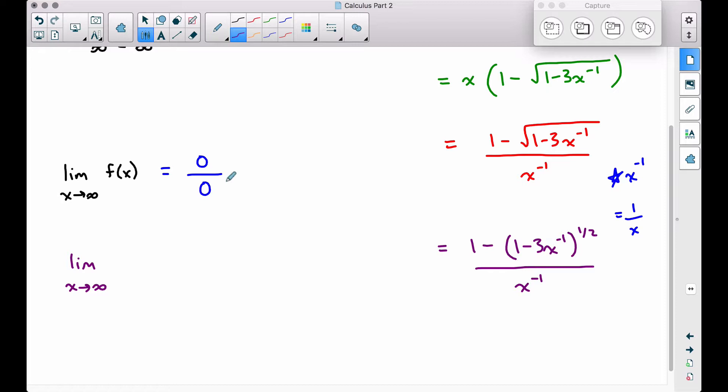We've already said this is going to be the 0 over 0 form, so let's take the derivative of this using L'Hopital's rule. The derivative of 1 is 0, so we have 0 minus, the derivative of this stuff here, we have to apply the chain rule, pull your 1 half down, leave the inside alone, so 1 minus 3x to the negative 1, and don't forget to subtract 1 from this exponent, leaving us with a negative 1 half. And then finally,